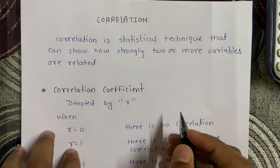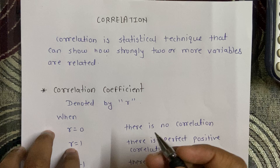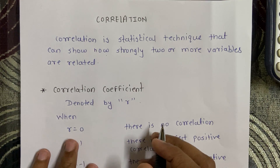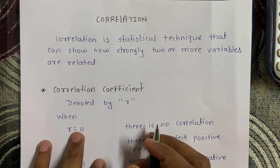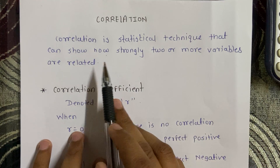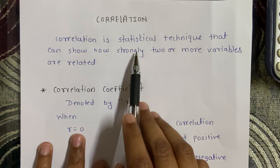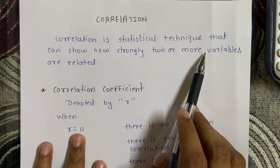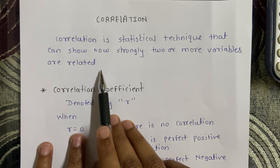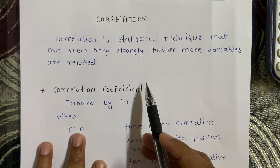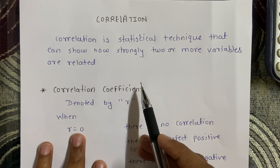Hello Learners, this is your guide Prachiti. Today we are going to study Spearman Rank Correlation, but before that let's understand what correlation is. Correlation by definition is a statistical technique that can show how strongly two or more variables are related to each other. In simple terms, correlation is used to determine the relationship between different variables.